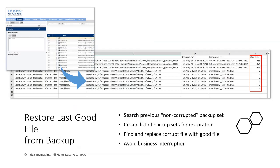You can then summarize which backup sets those files exist in. About nine different backup sets are shown here, containing a couple thousand files — the last good versions that need to be restored to the network to avoid downtime. Restoring them will eliminate and overwrite all the corrupt files.